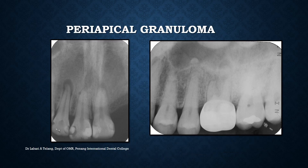Moving on, we're talking about a periapical granuloma where the inflammation is visible in the form of a well-defined radiolucency at the apex of the pulpally involved tooth. Here you can see in this lateral incisor there is a well-defined radiolucency with a very thick sclerotic margin. Similarly, in the molar here also a periapical granuloma is seen at the apex. It must be understood that on a radiograph it is very difficult to differentiate between a periapical granuloma and a small periapical cyst.